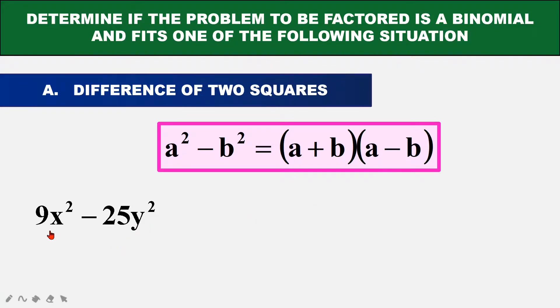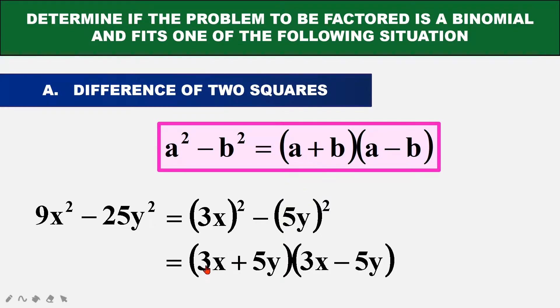So we can change that to 3X squared and 5Y squared. Once we get that, our A will be 3X and our B will be 5Y. So we can put that into this format. So we will have 3X plus 5Y for the first part and 3X minus 5Y for the second factor.